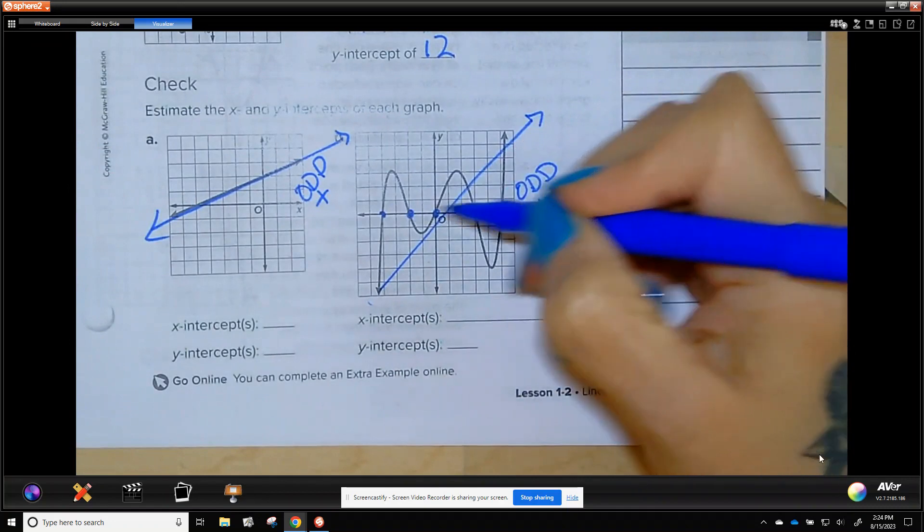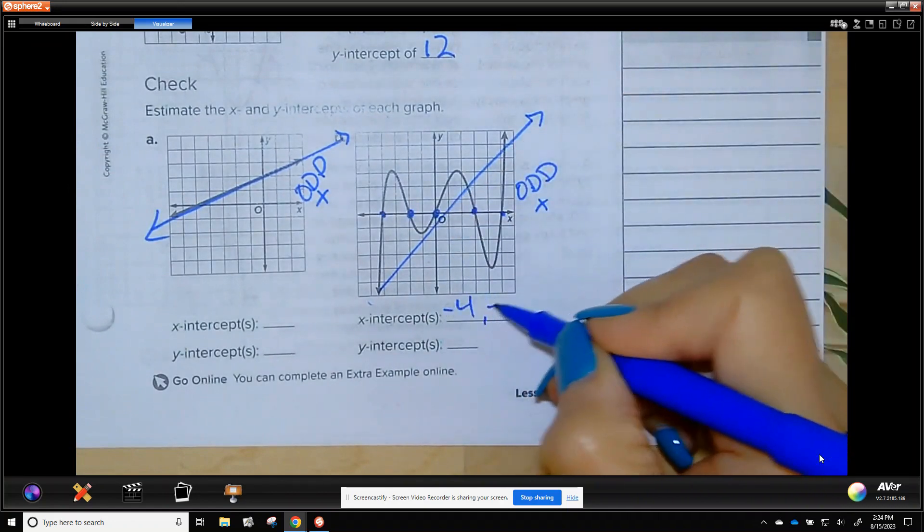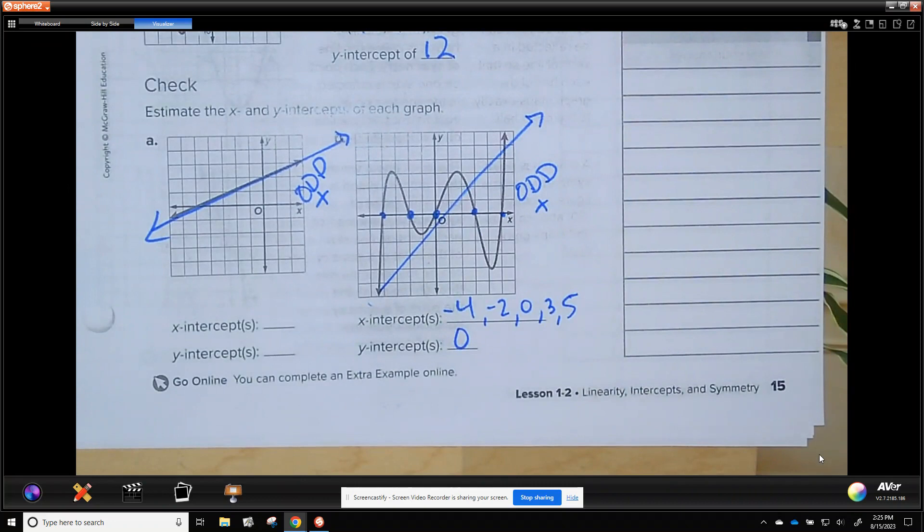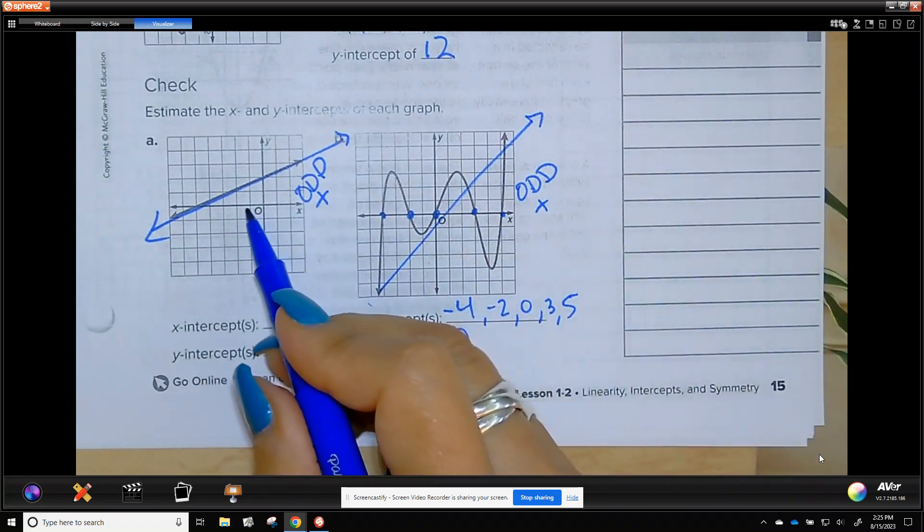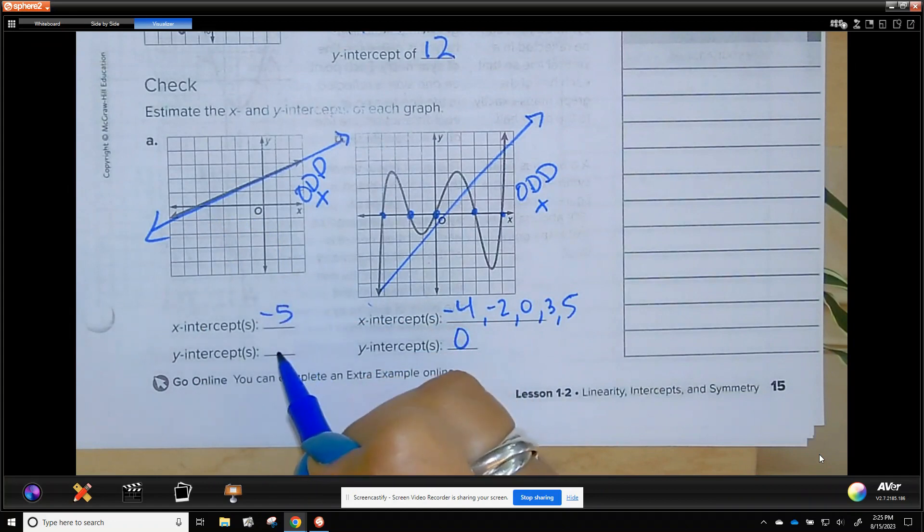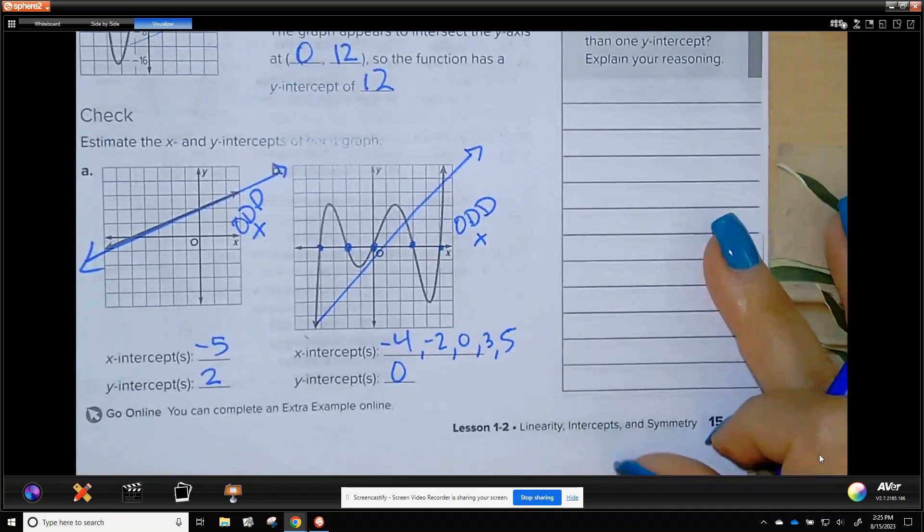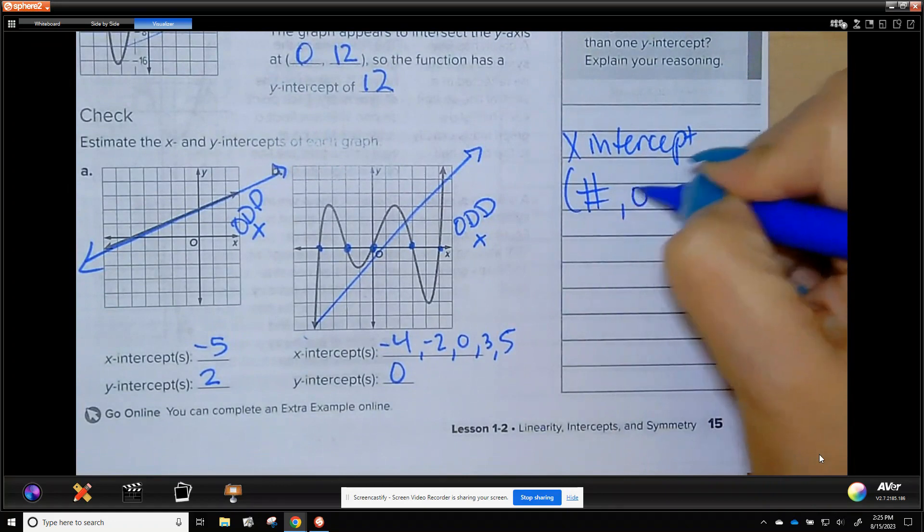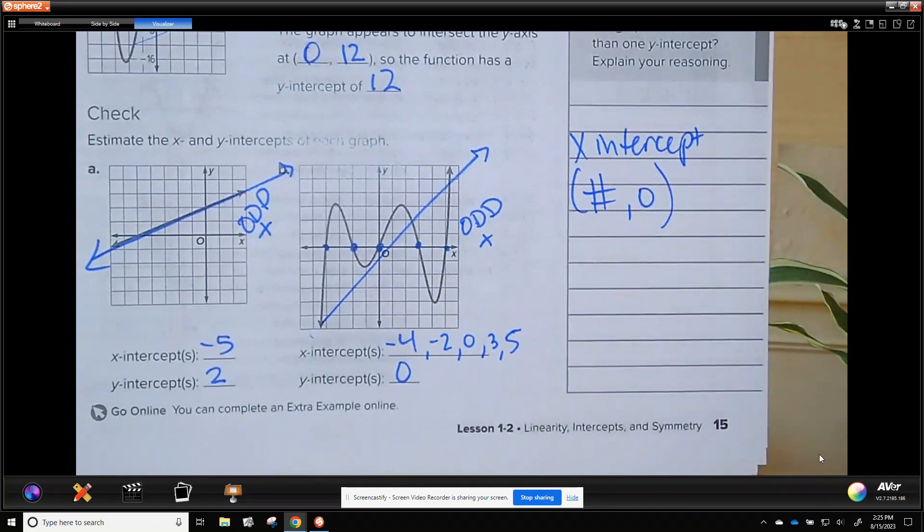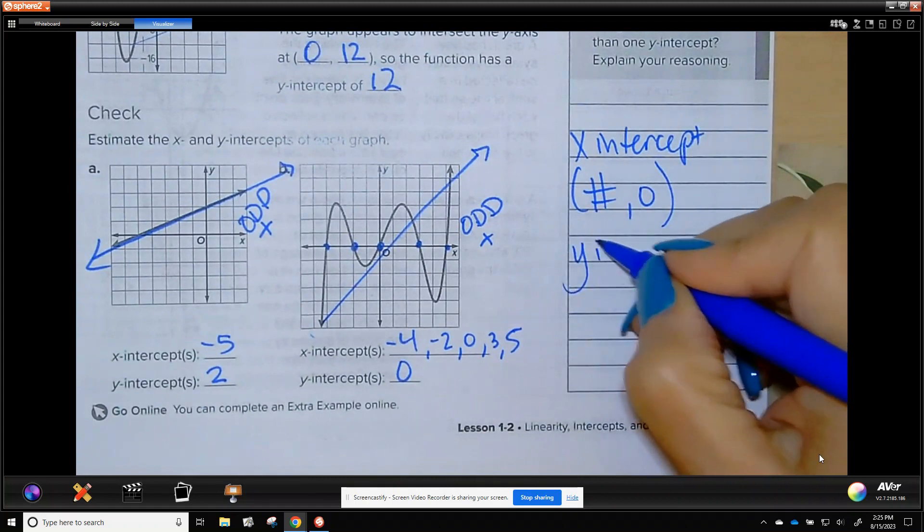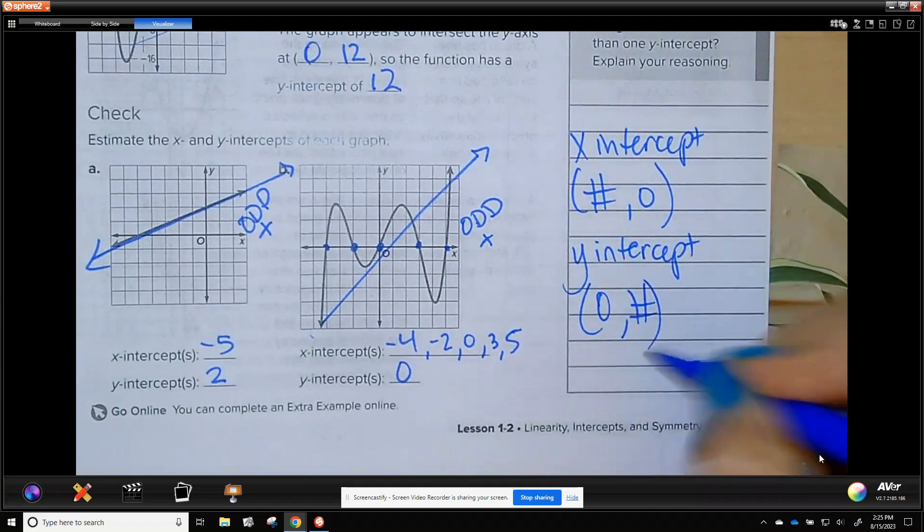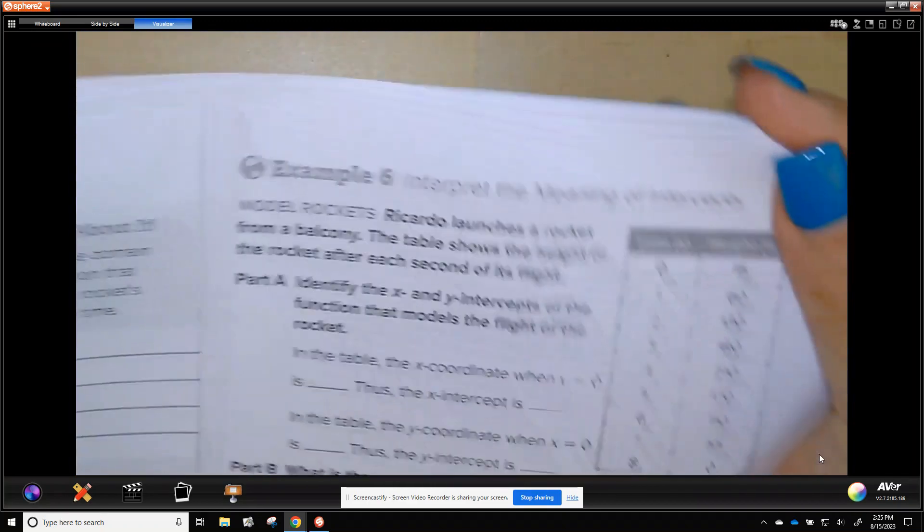Just these two are odd positive. The x-intercepts on this one is negative 4, negative 2, 0, 3, 5. The y-intercept is 0. The x-intercept is negative 5. The y-intercept is 2. So, just a note over here, your x-intercept is a number and 0. If you need to write it as a coordinate point, make sure and follow directions. If it asks for a coordinate point, you have to write the x and the y values. The y-intercept is 0 and a number. Page number 16.